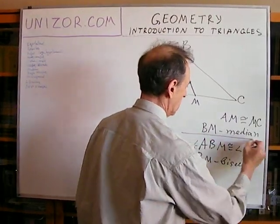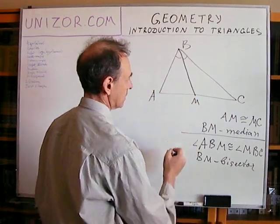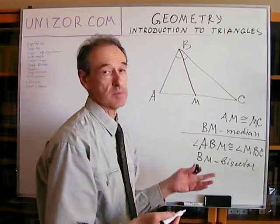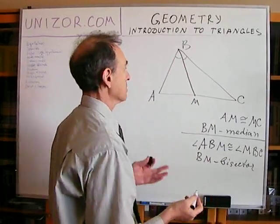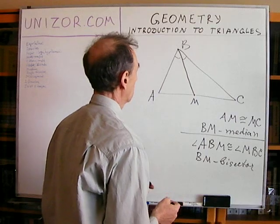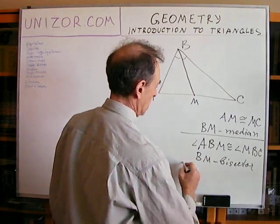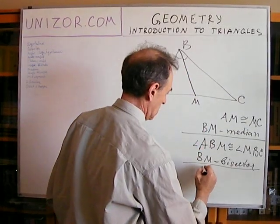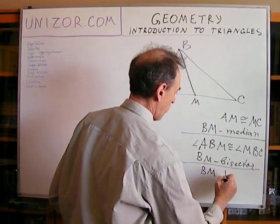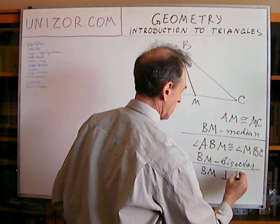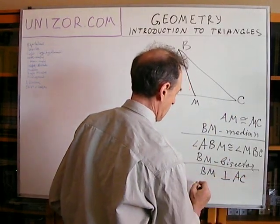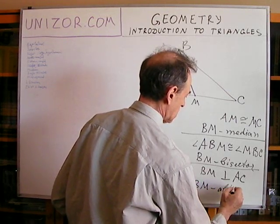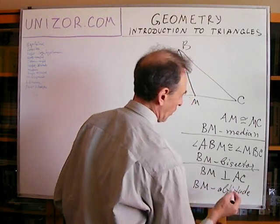These are different lines. Angle bisector might in some cases coincide with the median, sometimes not, it depends. And finally, if BM is perpendicular to AC, then BM is called altitude or height.